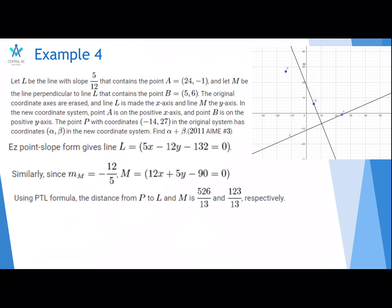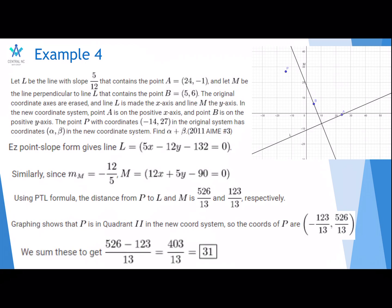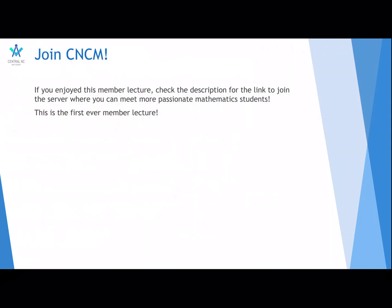Using the distance formula, the distance from P to L and M is 526/13 and 123/13 respectively because they have to be right angles. We graph this and it's easy to see that P is in quadrant 2 of the new coordinate system. So, the coordinates of P are (-123/13, 526/13). We add these coordinates together to get 526 minus 123 over 13 which equals 403/13 which is equal to 31.